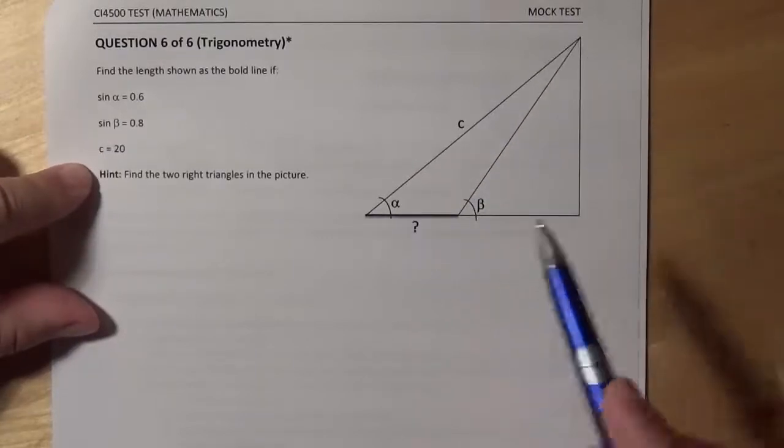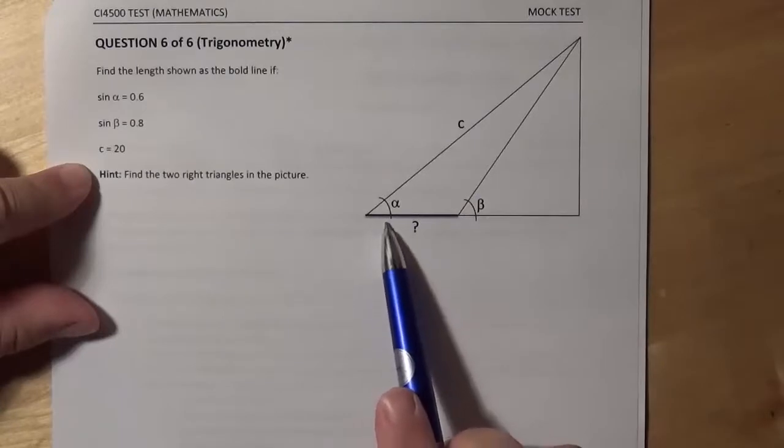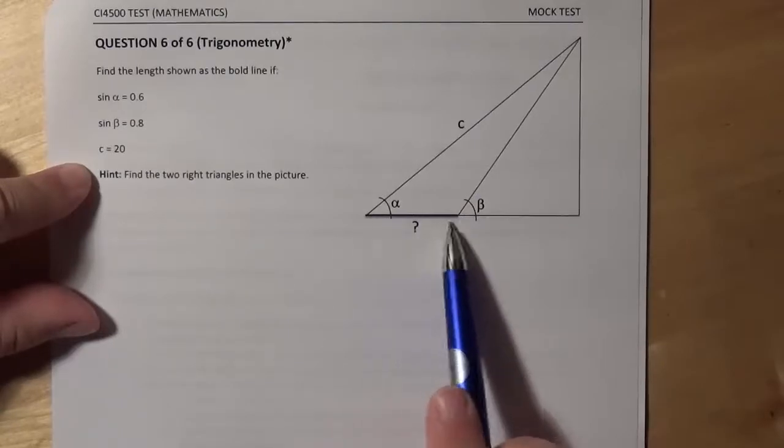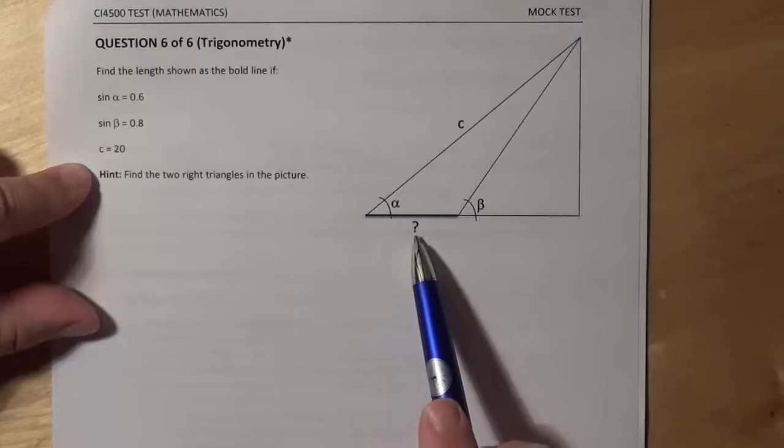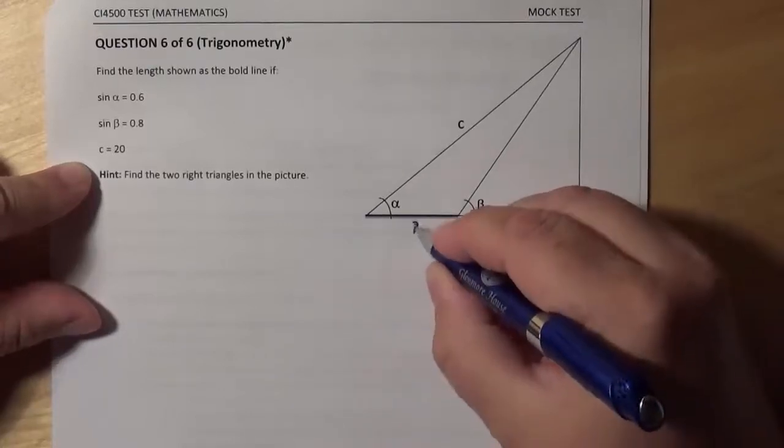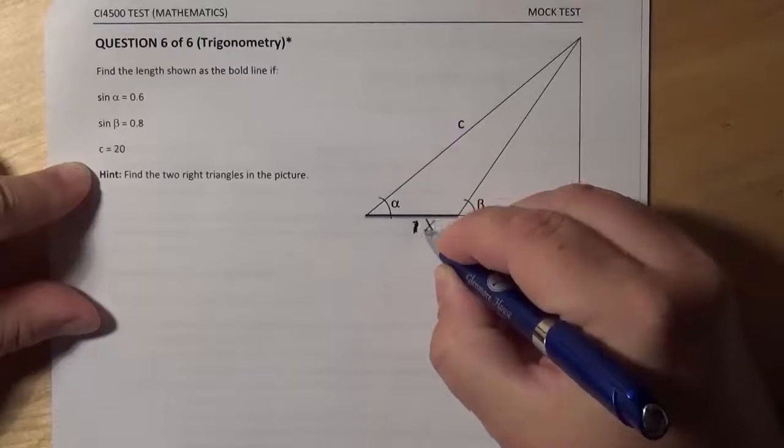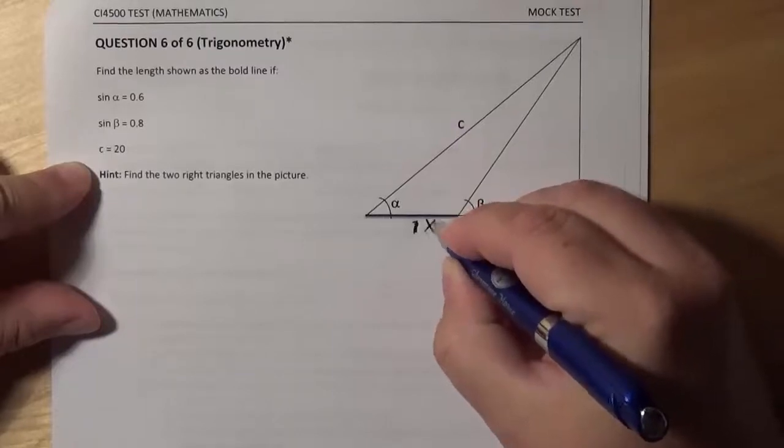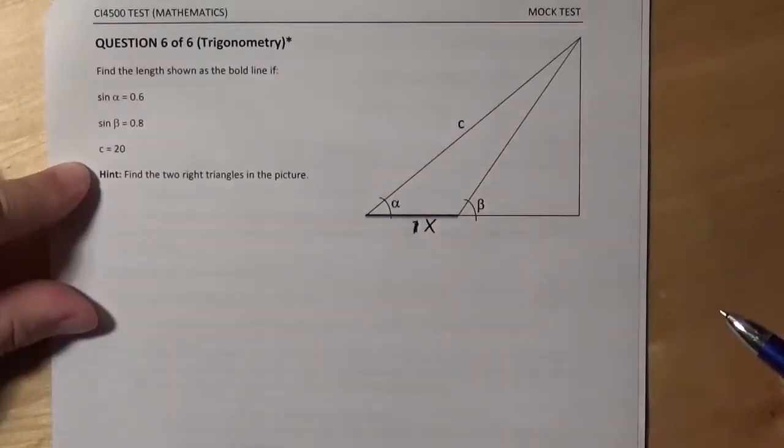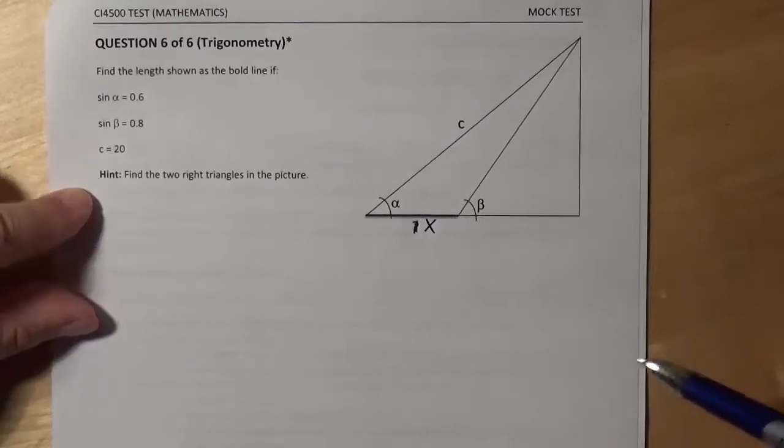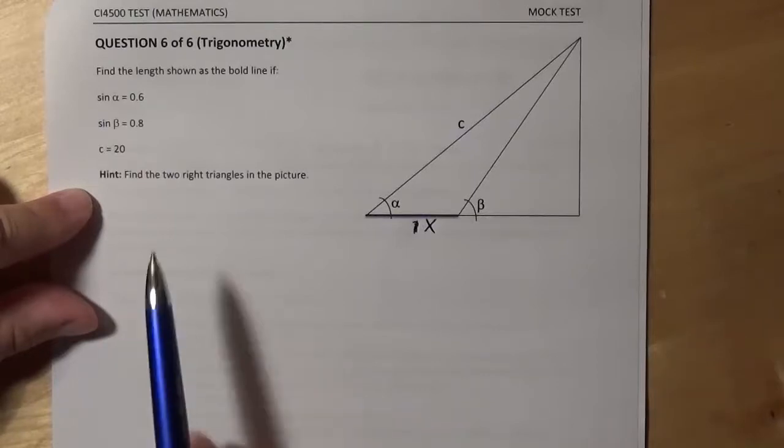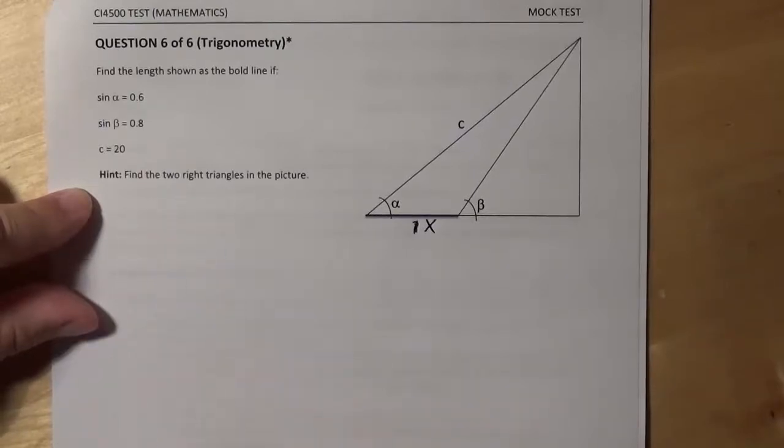The question is about the length marked with this bold line here. It's a question mark here. I will replace it by X, so we are looking for X. We also have a hint here. This is a universal hint for any trigonometric type of questions. Find, in this case, two right triangles in the picture.